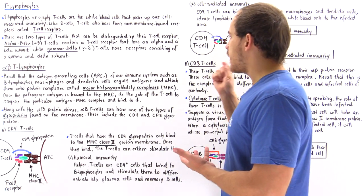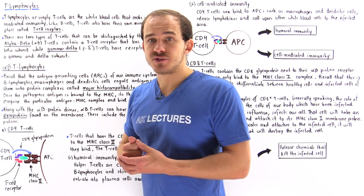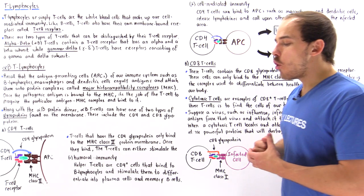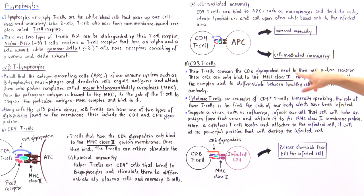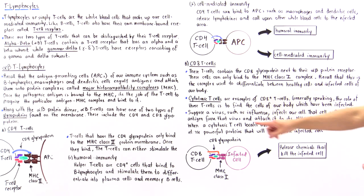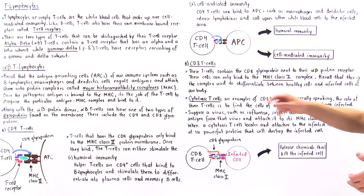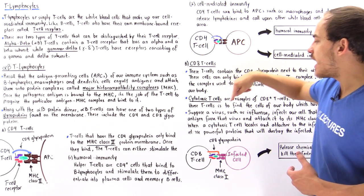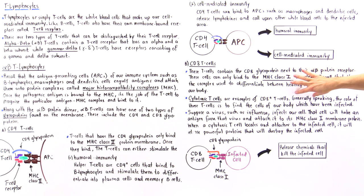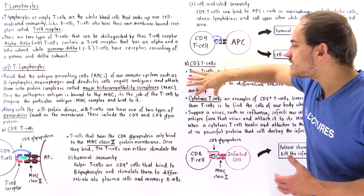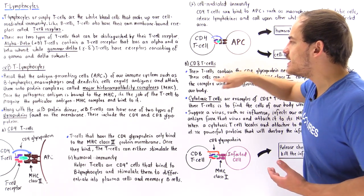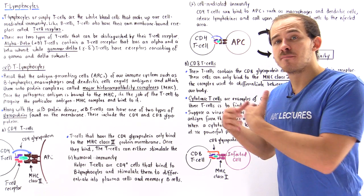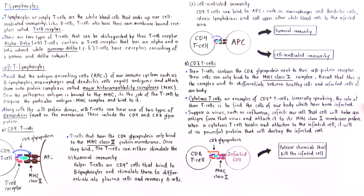One example of a T cell that contains a CD8 glycoprotein is the cytotoxic T cell, also known as the killer T cell, which is part of the cell-mediated immunity. Cytotoxic T cells are examples of CD8-positive T cells — the plus simply means these cells have this glycoprotein. Generally speaking, these cytotoxic T cells and all CD8 T cells are those cells that can differentiate infected cells from healthy cells and kill off those infected cells.